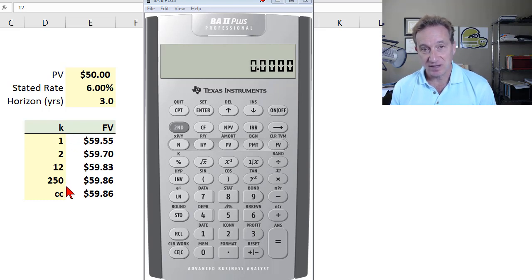As we increase k, the number of periods per year or compound frequency, naturally we expect that future value, the value at the end of three years, to be higher, all the way until we go to continuous compounding. That's as rapidly as we can compound. So that'll have the highest value here.